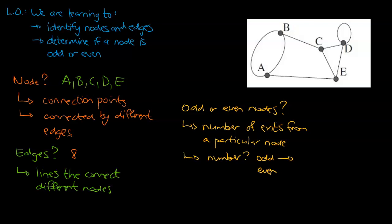If you have an odd number, that node is therefore going to be an odd node. That's because there is an odd number of ways you could leave that node. And if there's an even number, we're going to call that an even node. And that's because there is an even amount of ways to leave that particular node.